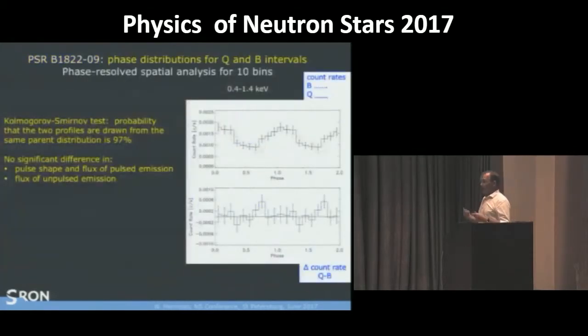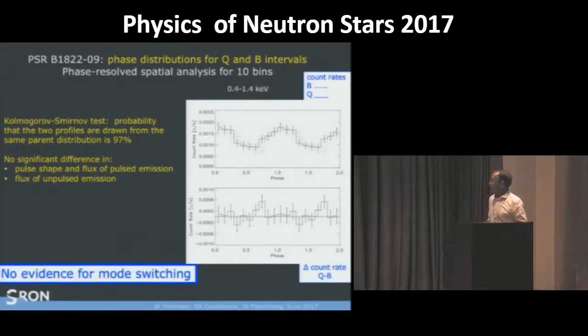We did make many tests whether we see evidence for mode switching. I show you only this last one. We don't see evidence in this case for mode switching. And here we show the pulse profiles in both modes, background subtracted. And the fact that they are on top of each other. And we are drawn from the same parent distribution at the 97% level. We can say that the pulse shape and flux of the pulsed emission doesn't change and flux of the unpulsed emission. We made additional checks but we don't see any evidence for mode switching.